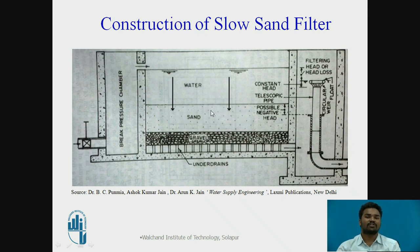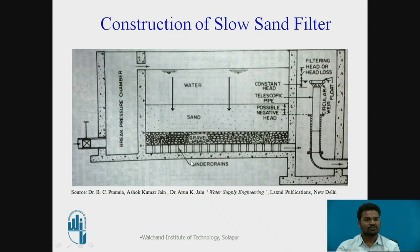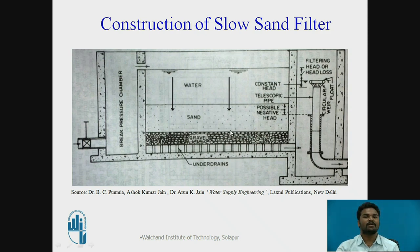The slow sand filter is a rectangular basin, open and constructed below the finished ground level. The surface area of the slow sand filter is between 500 to 2000 m². The slope of the floor is 1 in 200. The rate of filtration is about 100 to 200 liters per m² per hour. The depth of the tank is 2.5 to 4 meters.